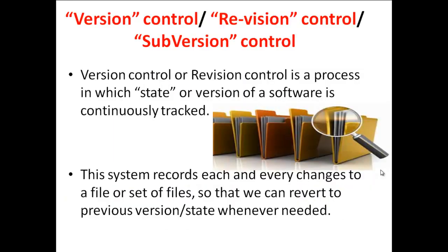Version control, revision control, and subversion control are all the same thing. Version control is basically a process in which the state or version of software is continuously tracked. This system records each and every change to a file or set of files made during development, so that we can at any time revert back to a previous version or previous state of the code whenever there is a requirement. Each and every change, even a single line, is tracked.